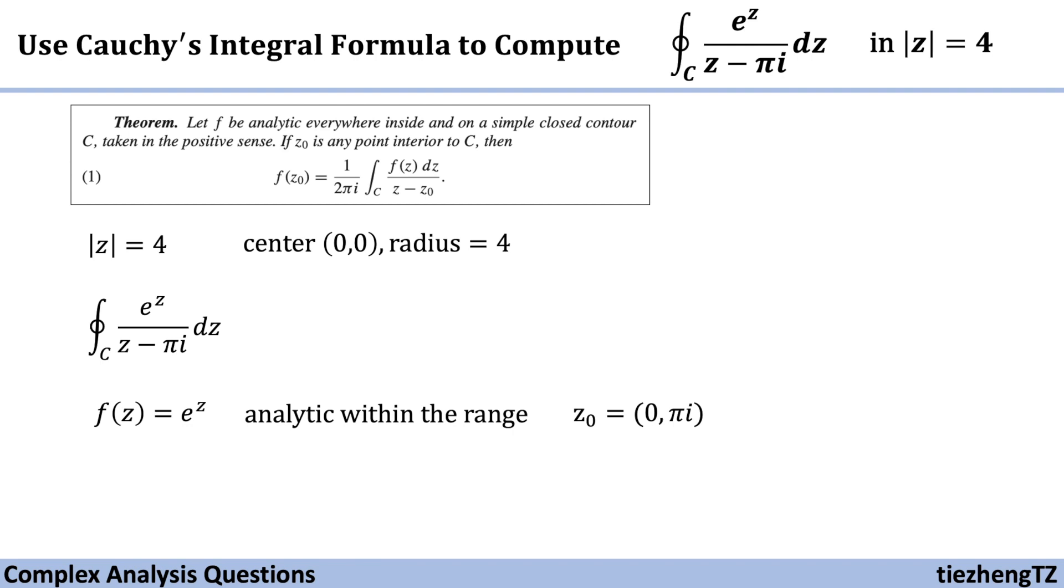Since π is approximately 3.14, which is less than 4, we know it is a point interior to this given closed contour.